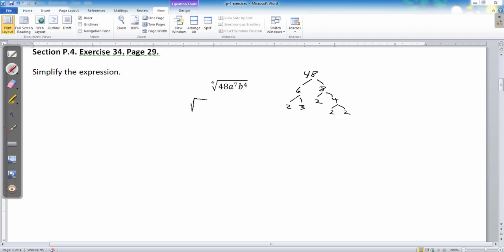So, this becomes the fourth root of 1, 2, 3, 4. I have four 2's, 2 to the fourth, 1, 3, the a to the seventh, and b to the fourth. So, this also will have one new piece of information as well.